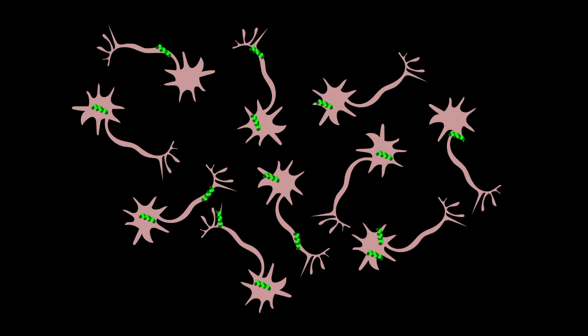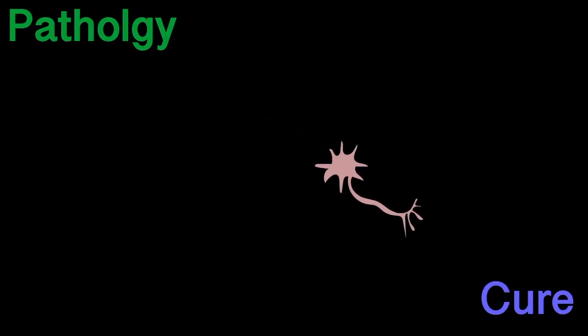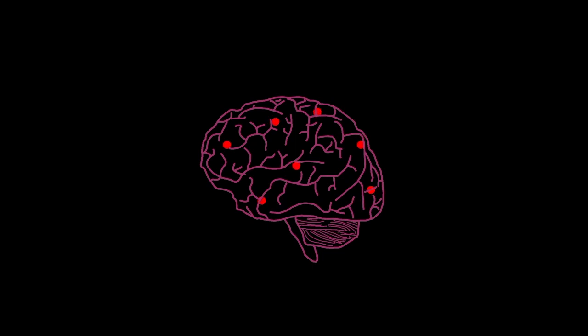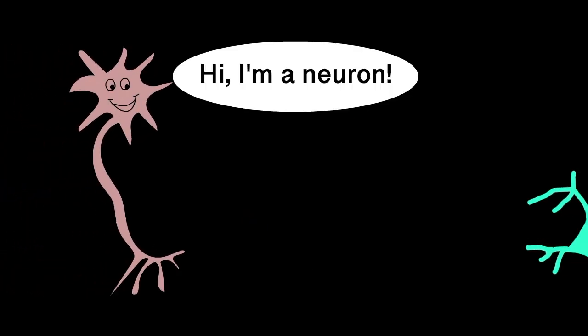We know a lot about the pathology, but we are missing key links that will allow us to find a cure. One of those key links may involve inflammation in the brain. In addition to neurons, your brain contains other cell types called glia.